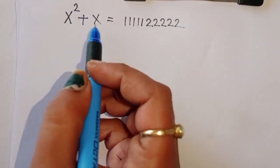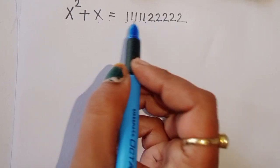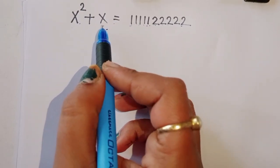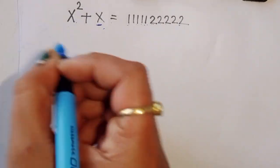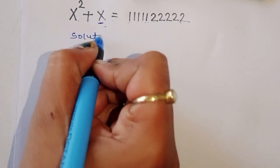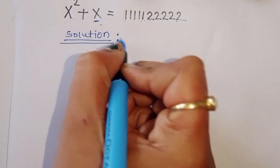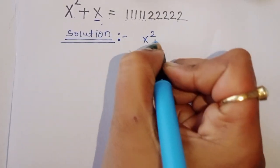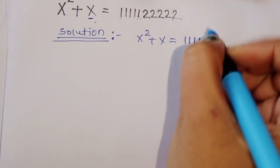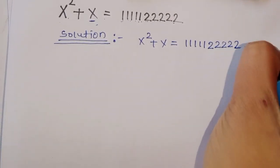The question is given: x squared plus x is equal to 11111 22222 — that is 5 ones followed by 5 twos. This is the value of x squared plus x, and we have to find the value of x. Let's see the solution.